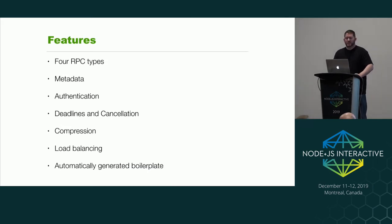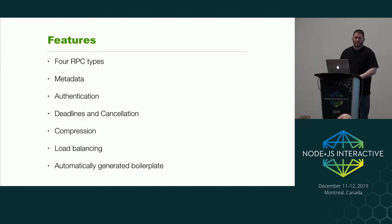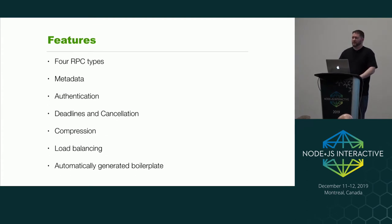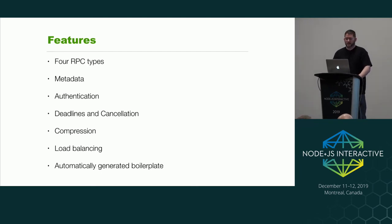Some of the features that come with gRPC: there are four RPC types — unary, client streaming, server streaming, and bi-directional streaming. Client-side streaming means the client sends a stream of messages to the server and the server responds with one response. Server-side streaming is where the client sends one request and the server responds with a stream. Unary is just a fancy word for single request, single response — kind of what you'd think of with a normal HTTP request.